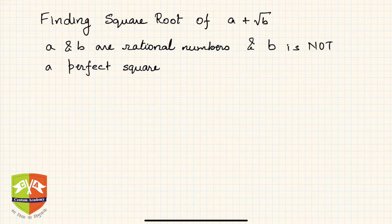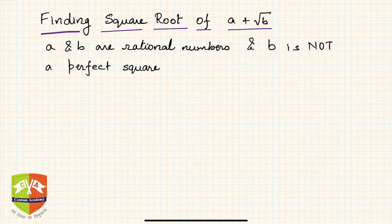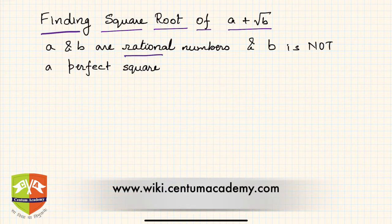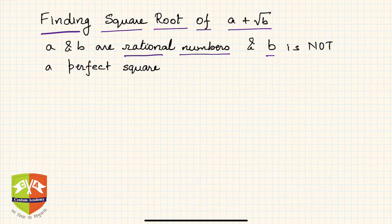Welcome to this session on surds. Today we are going to discuss an important topic: finding the square root of (a + √b). You would have encountered these kinds of problems where a surd is given — a compound surd — and you have to find its square root, where a and b are rational numbers. Note that b is not a perfect square, because if b were a perfect square, it would no longer be a surd.